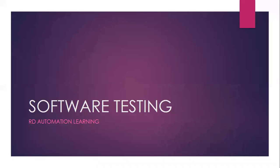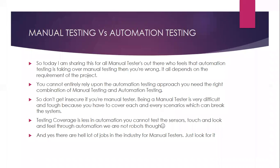Welcome to the channel of RD Automation Learning. This is the second part of software testing. There are basically two types of testing you will encounter in your career: manual testing and automation testing. Manual testing means everything needs to be done by the tester themselves, without the help of any tools, scripts, or automation. They would be executing each and every test case by themselves.